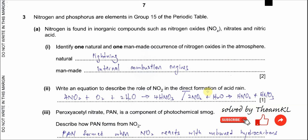This question is about nitrogen and phosphorus elements. Nitrogen is found in inorganic compounds such as nitrogen oxide, nitrates, and nitric acid.